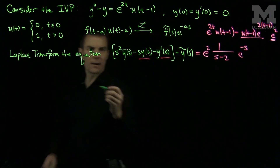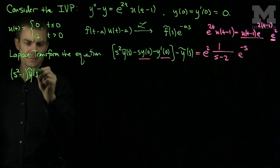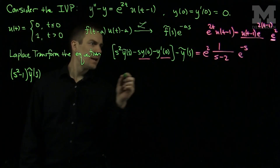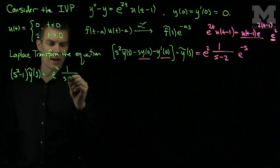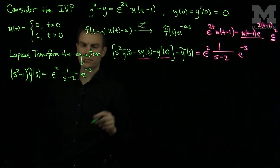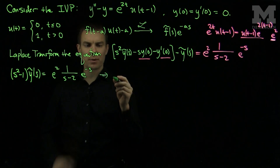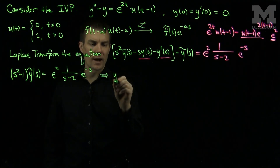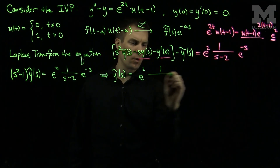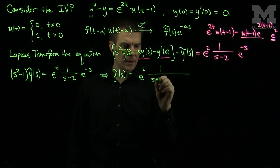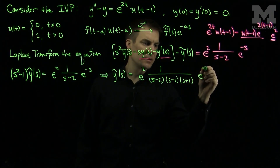We notice that both initial condition terms are zero, so we get s squared minus 1 times y-tilde of s equals e squared times 1 over s minus 2 times e to the negative s. Factoring s squared minus 1 as s minus 1 times s plus 1, we find that y-tilde of s equals e squared times 1 over (s minus 2)(s minus 1)(s plus 1) times e to the negative s.